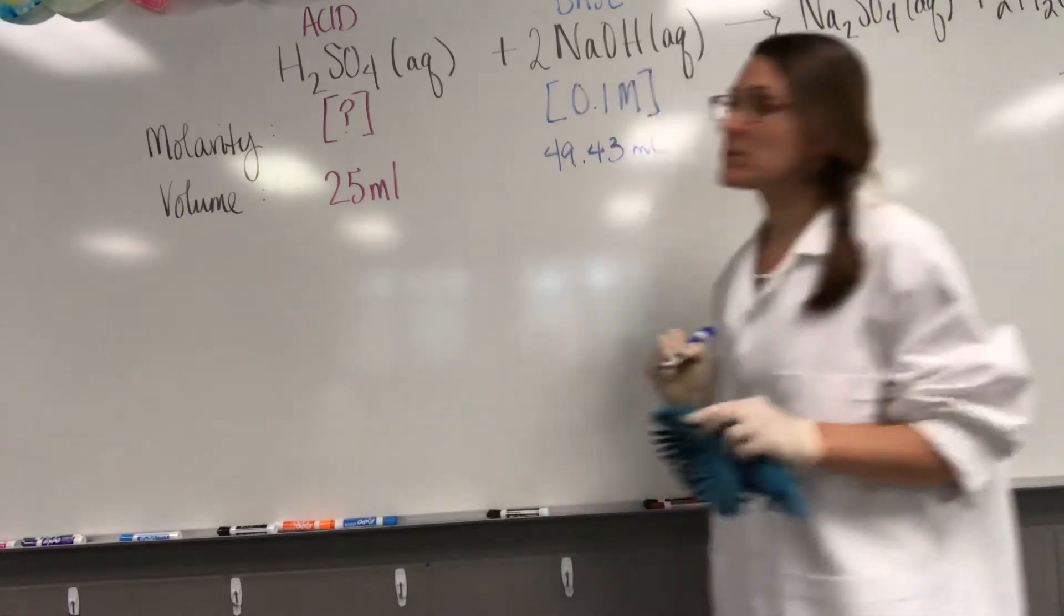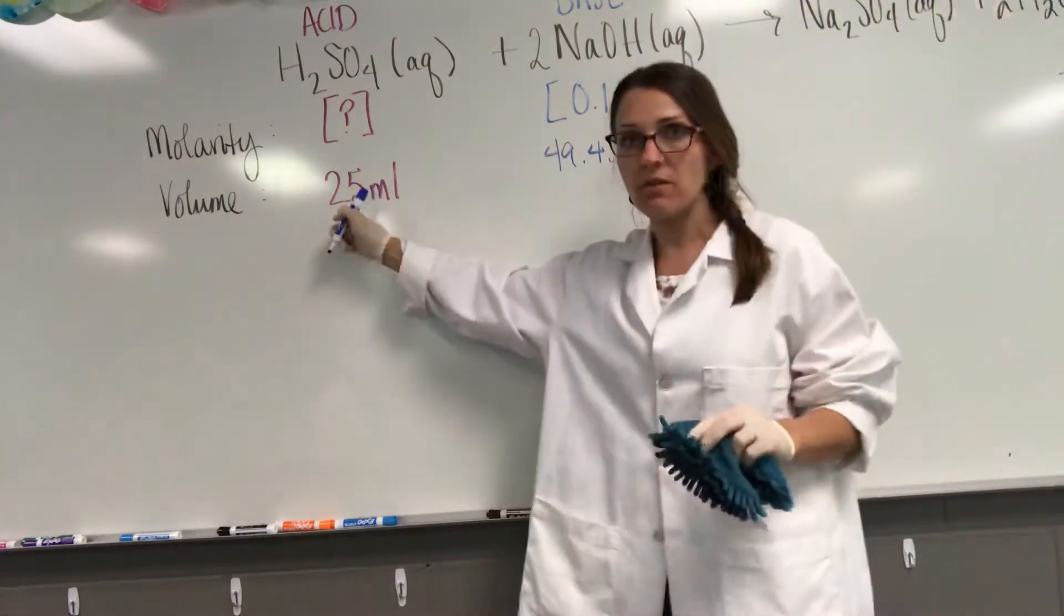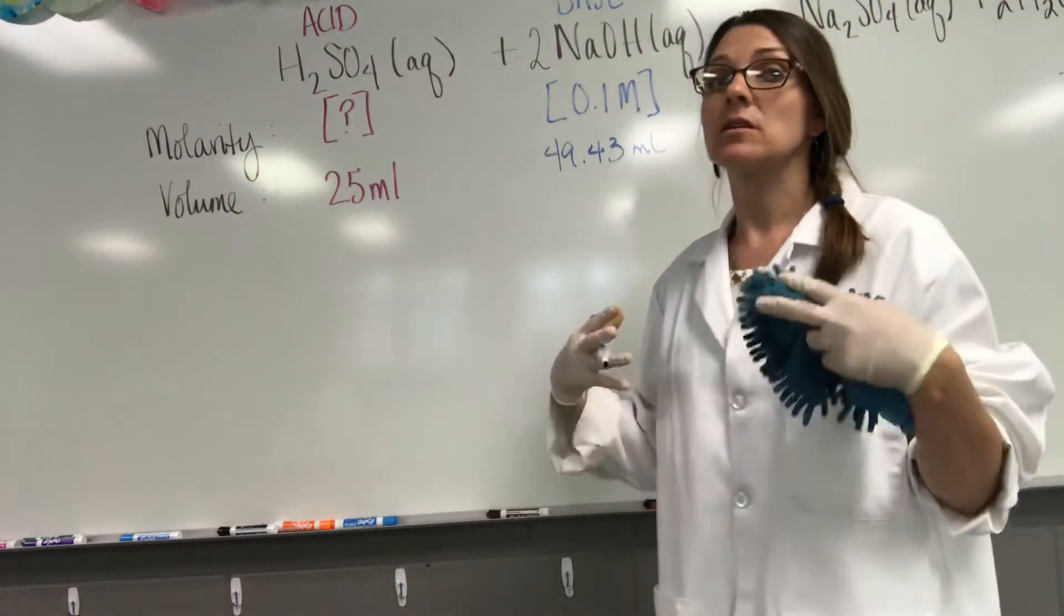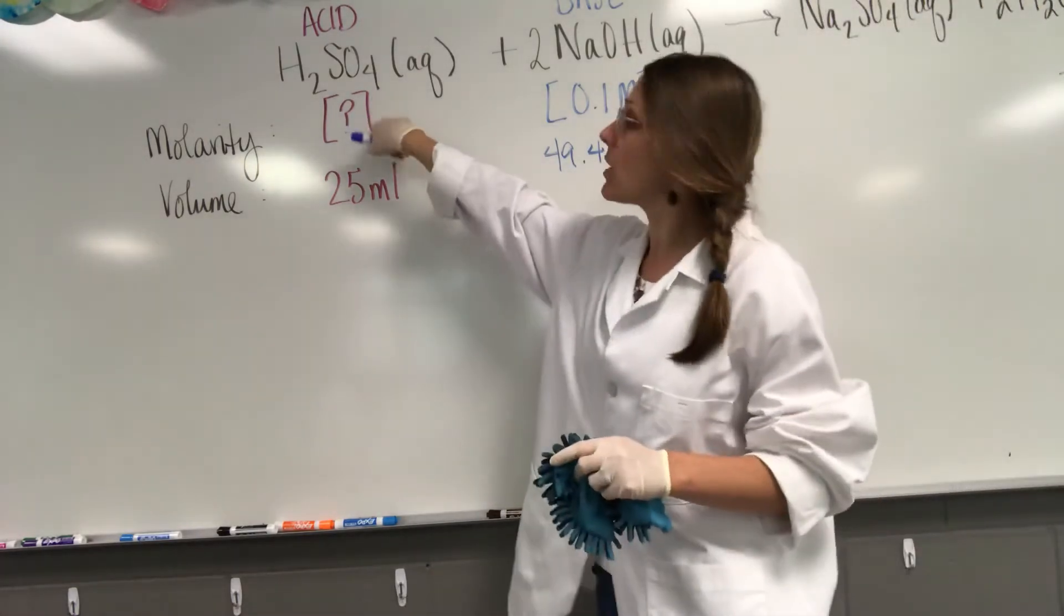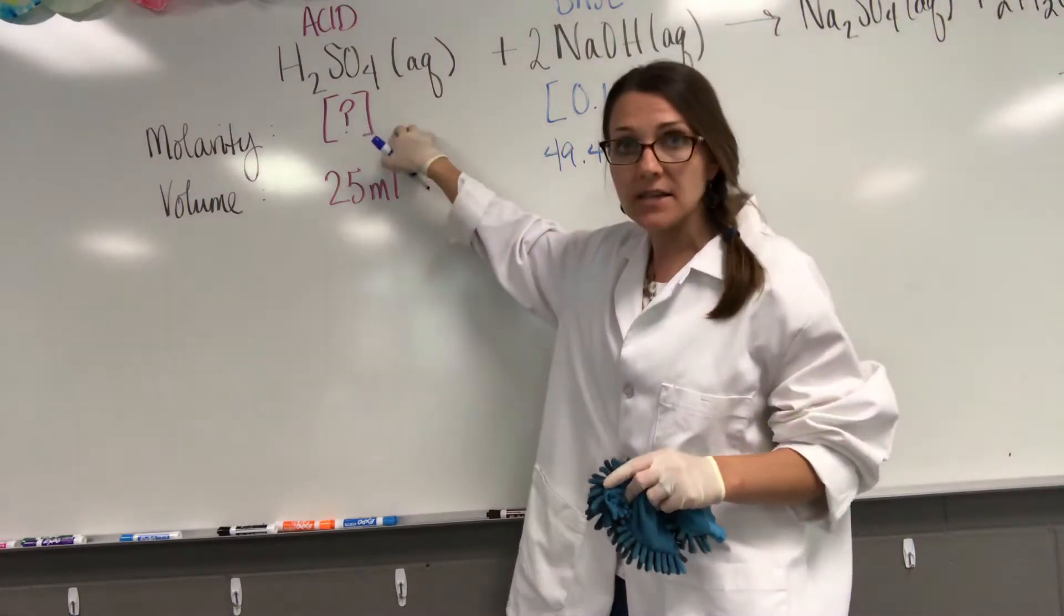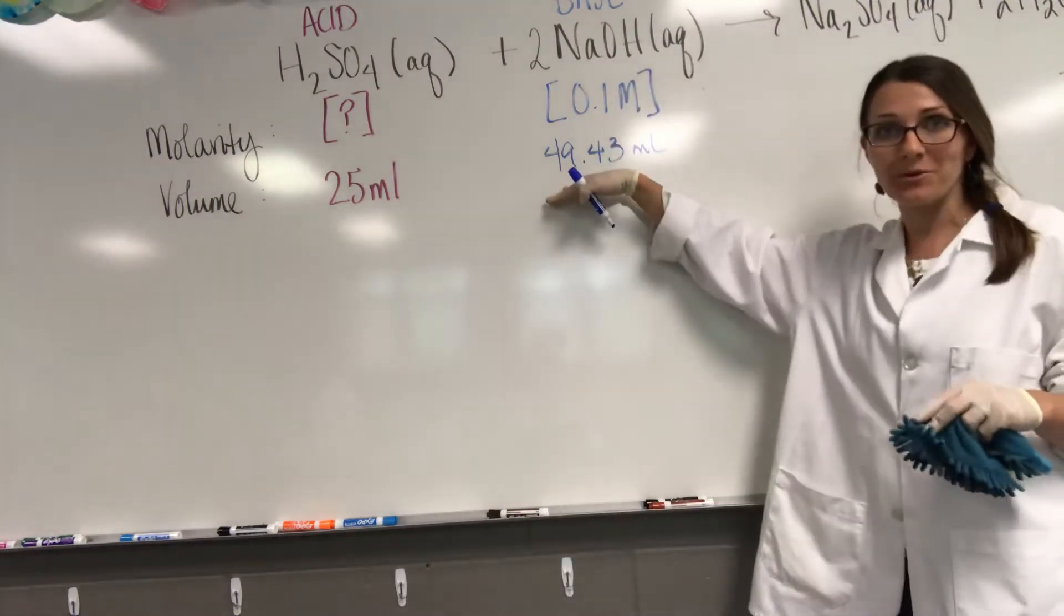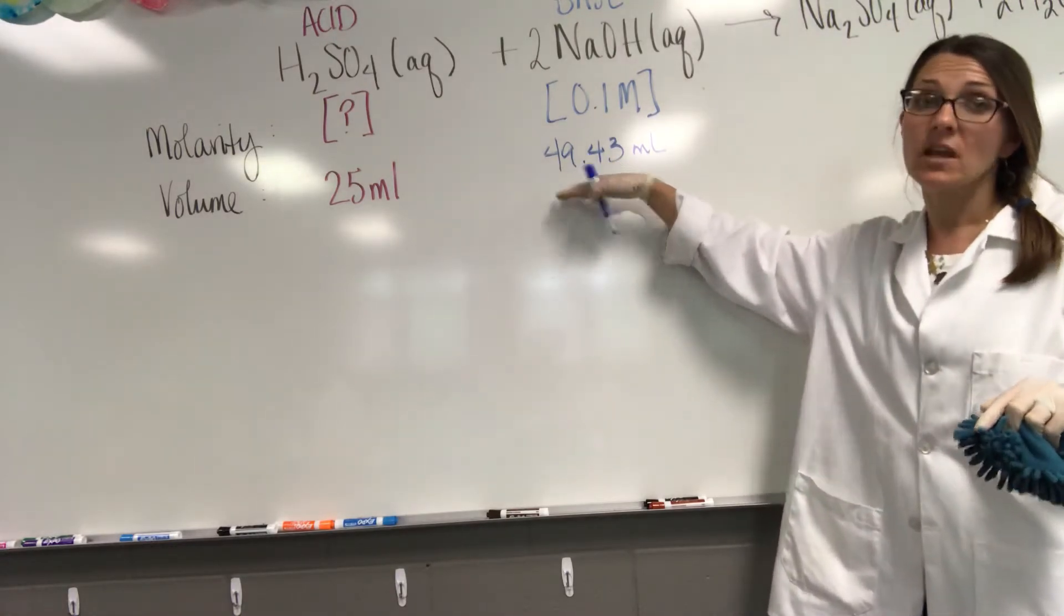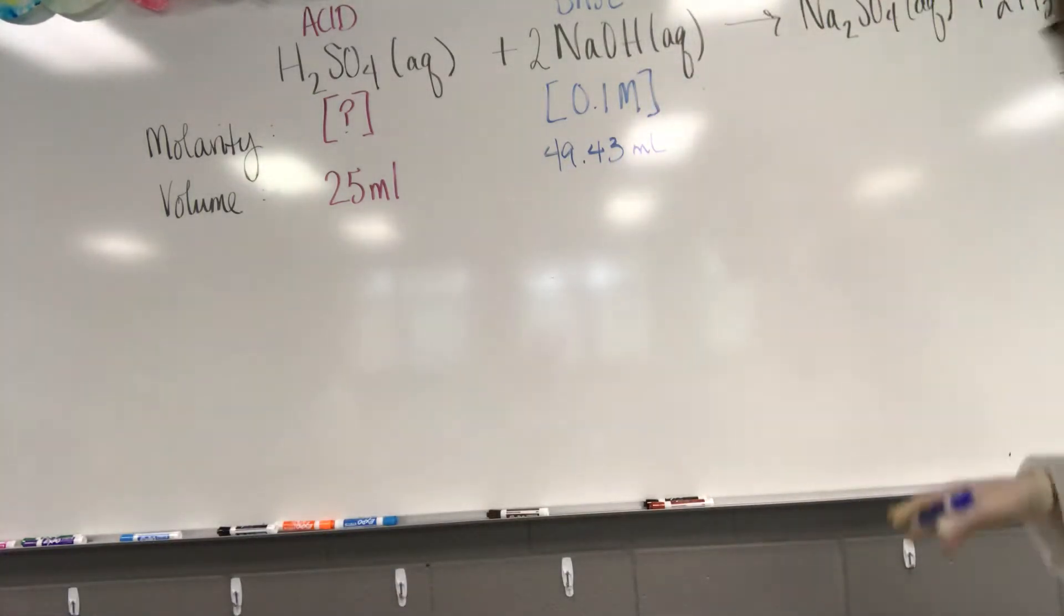I used that in these three trials to titrate this 25 milliliters of unknown sulfuric acid. So the last step guys is that we need to figure out what would be the molarity of that unknown acid, given that it takes 49.43 according to our calculations mils to titrate it. So let's figure it out.